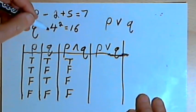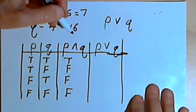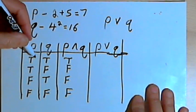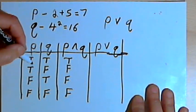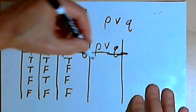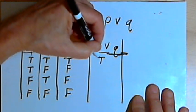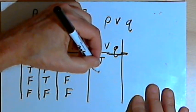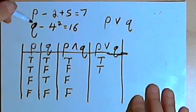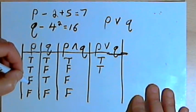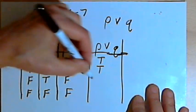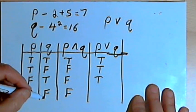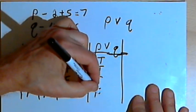For disjunction to be true, all I need is for either one of the parts to be true. They can both be true, but they don't have to be — just one is enough. If P is true and Q is true, the disjunction is true. If P is true and Q is false, the disjunction is still true, because all I needed was one. If P is false and Q is true, I've still got one, so that disjunction is true. It's only if P is false and Q is false that the disjunction is false.